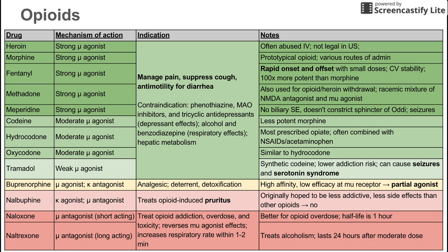Next is naloxone, which is a short-acting mu antagonist. Its main use is to treat opioid overdose and toxicity — it reverses the effects of the mu agonists listed above. It's specifically used for opioid overdose and has a relatively short half-life of one hour.